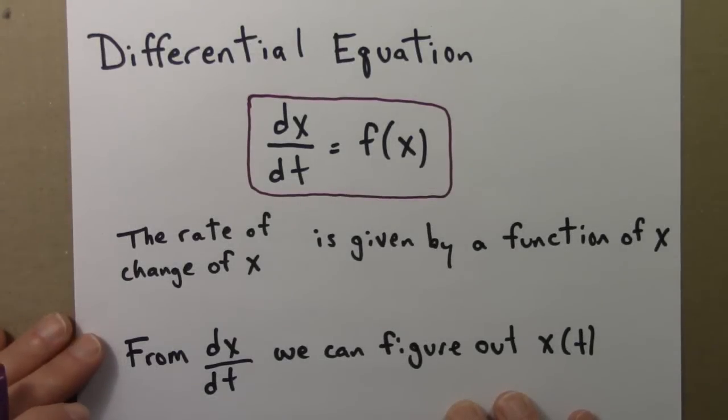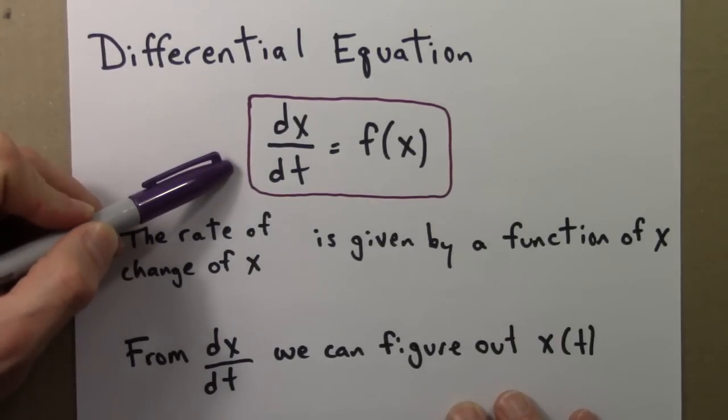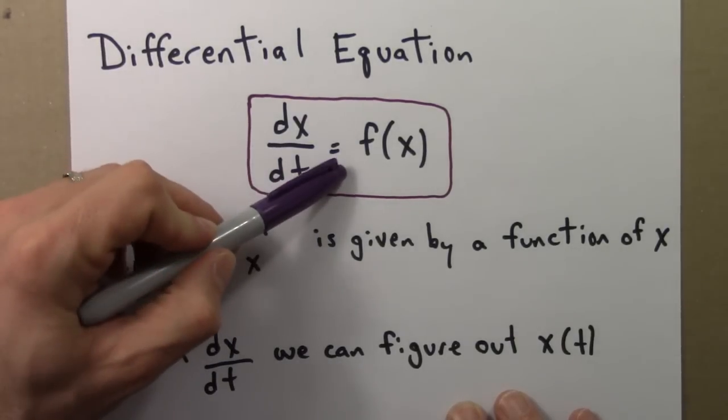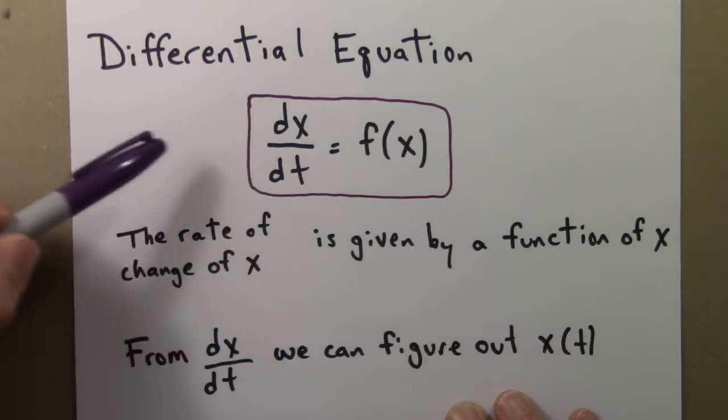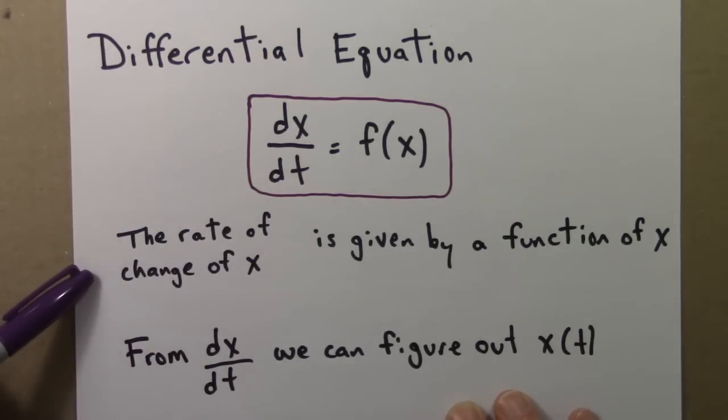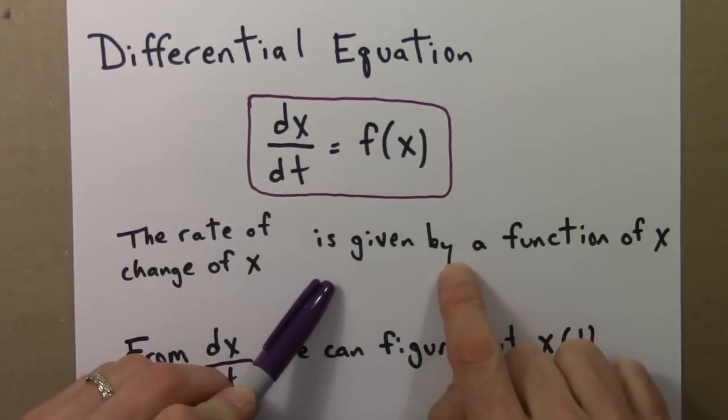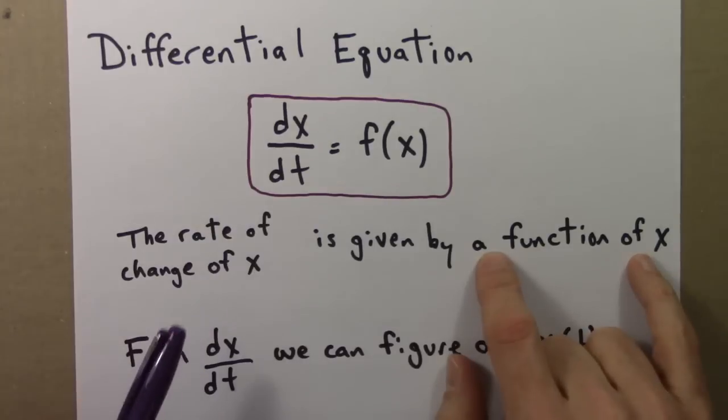So let's go back to looking at the equation. A differential equation is an equation of this form: the derivative of x is a function of x. In words, this equation says the following: the rate of change of x, how fast x is increasing or decreasing, that's the derivative, is given by, that's the equal sign, a function of x.